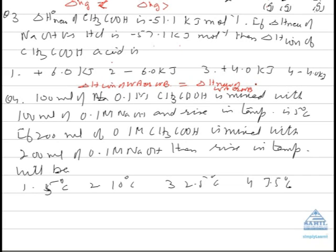With strong acid or strong base, it's minus 57.1 kJ. In this case, it will come out to be plus 6 kJ. So the answer will be first. Dear students, enthalpy of neutralization ionization will always be positive because you have to give energy to ionize the acid since it is a weak acid.